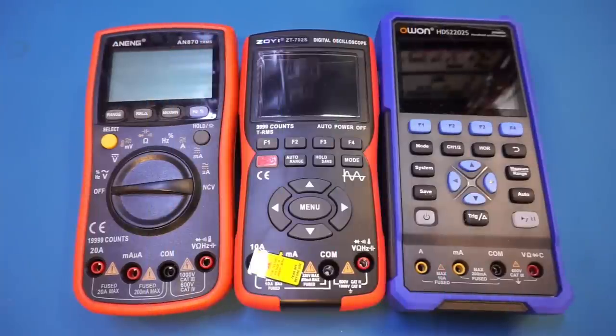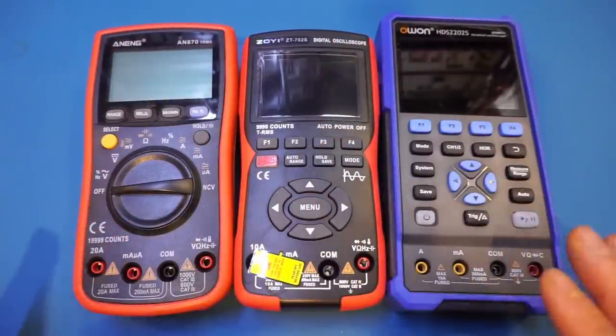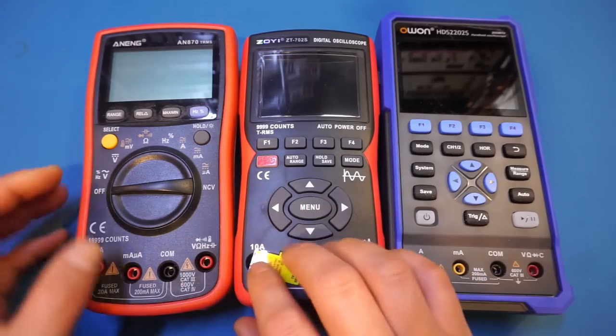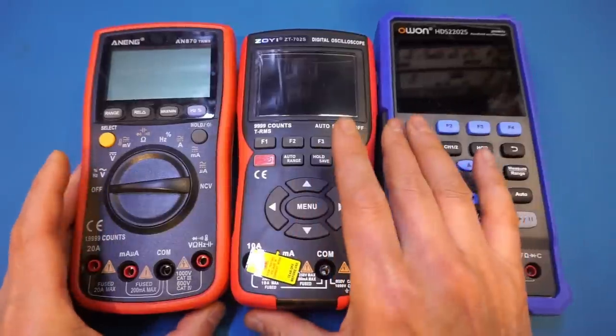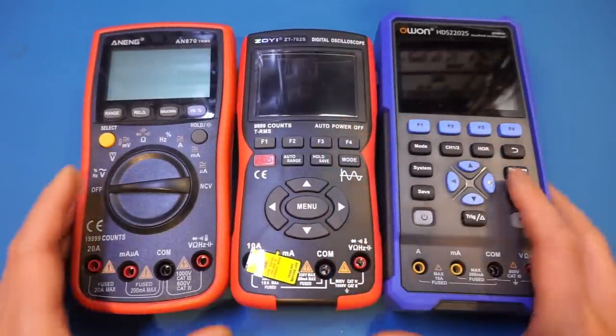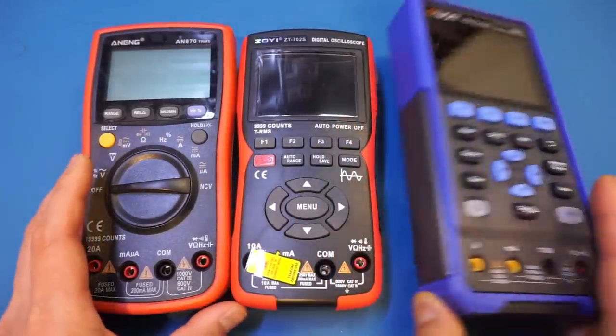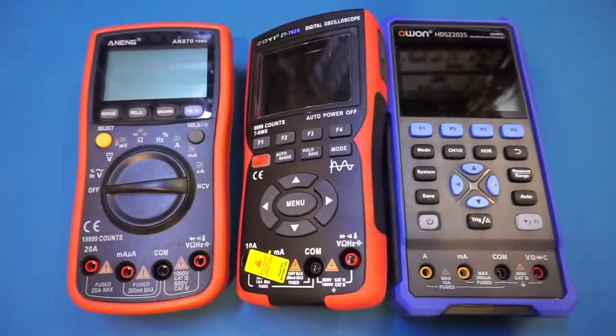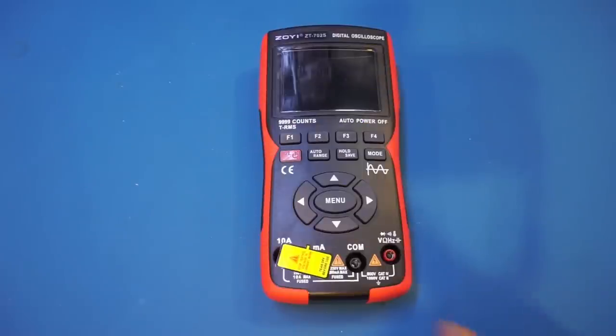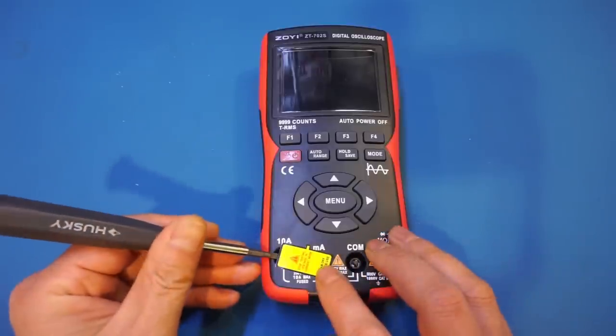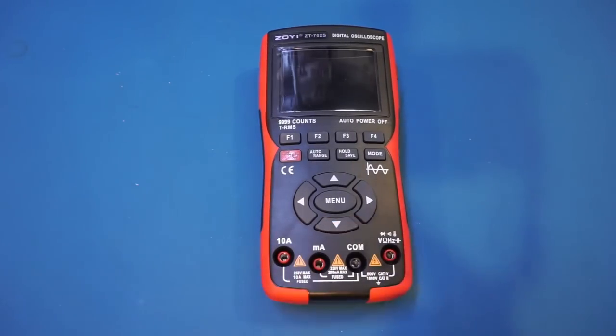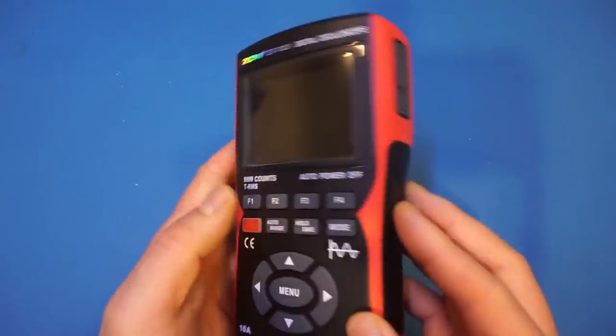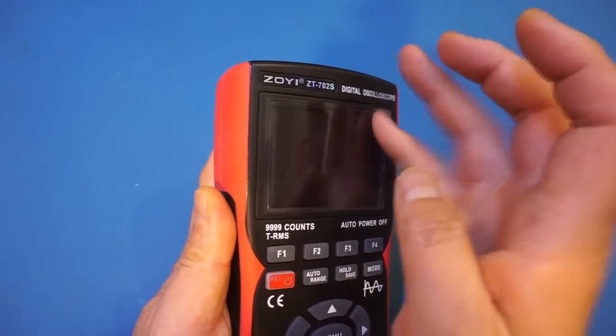By the way, in case you are wondering about the size of the ZT702S, it is about the same size as a standard multimeter. As you can see, I have an AN-870 by the side here for comparison. And it's definitely quite a bit smaller compared to the O1-HDS200 series, and of course it weighs much lighter as well. The stickers over the current jacks remind you that you should pay attention to what measurement range before doing your measurements. Let's remove this protective cover.